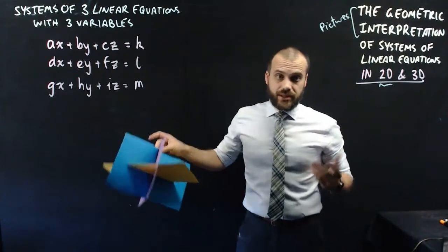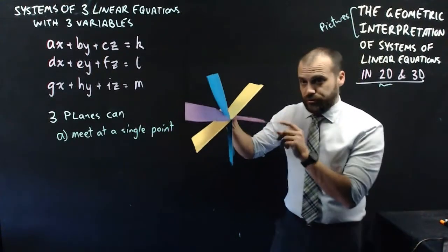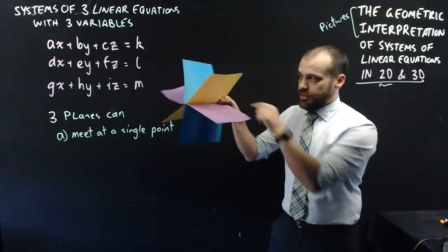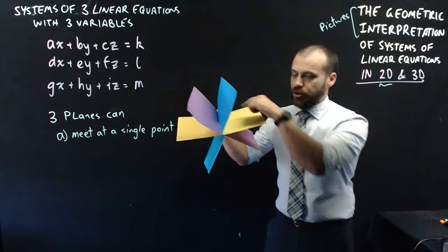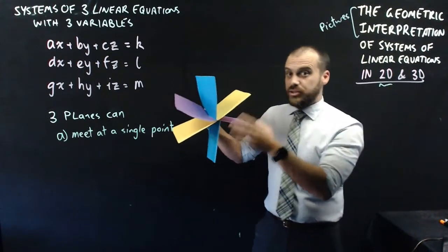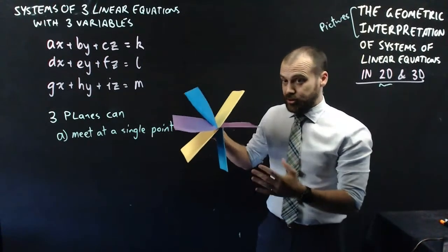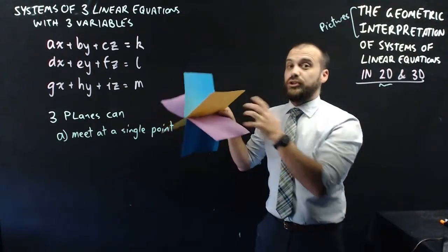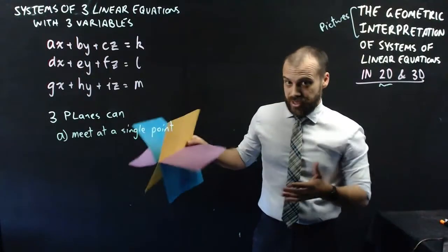Here's my second option. Now, I've got three planes here, and they've been placed through each other. They're meeting along a line. So these three planes aren't meeting at a single point. Instead, we can come up with a vector equation or a Cartesian equation for the line on which they meet.